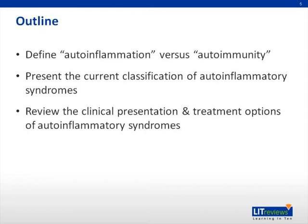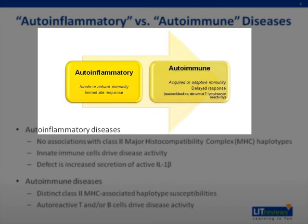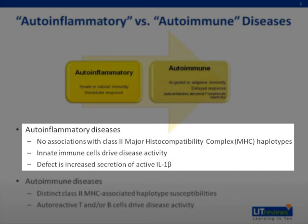A simple way to think about the two concepts of auto-inflammatory versus autoimmune diseases is demonstrated in the figure on the top of the slide. In both types of diseases, tissue damage is mediated through our immune system. However, in auto-inflammatory diseases, there are no MHC class II associations and innate immune cells such as macrophages or neutrophils are the main mediators of tissue damage, and the main defect is overexpression of IL-1 beta.